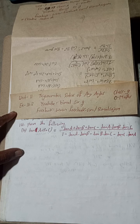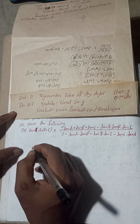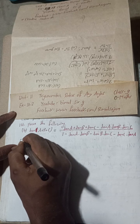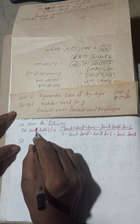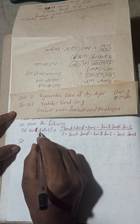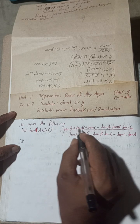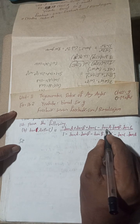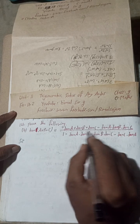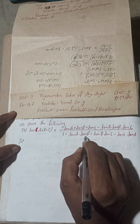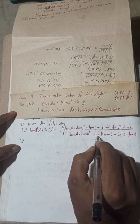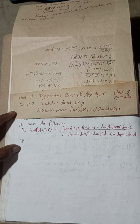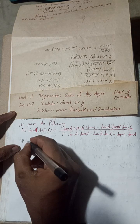Now let's begin the solution. We need to prove the following: tan(a + b + c) equals tan a + tan b + tan c − tan a · tan b · tan c, all divided by 1 − tan a · tan b − tan b · tan c − tan c · tan a.